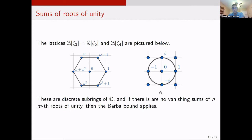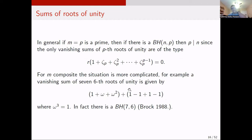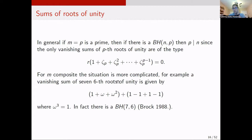It is therefore interesting to consider generalizations of the maximal determinant problem to these cases m=2, 3, 4, 6. As a remark, if the order of roots of unity is prime, then a BH(n,p) can only exist if p divides n, because the only type of vanishing sum of p-th roots of unity requires all n roots summing to zero. For a composite case, more non-trivial cancellations are possible.